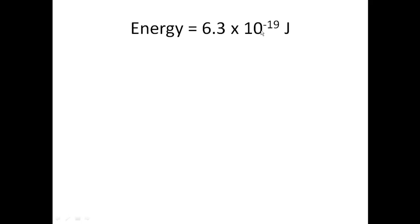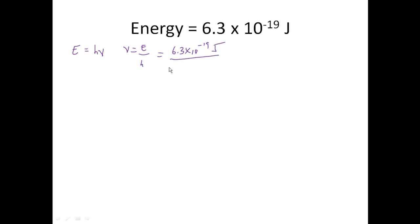Here I'm given energy and I want to calculate the frequency. Energy is equal to Planck's constant times the frequency, which means frequency is equal to energy over Planck's constant. So that's equal to 6.3 times 10 to the minus 19th joules divided by 6.626 times 10 to the minus 34th.